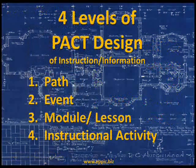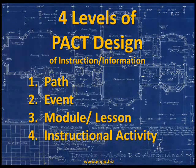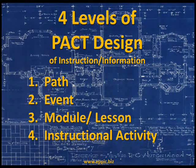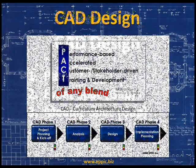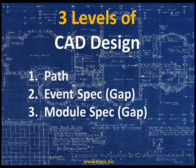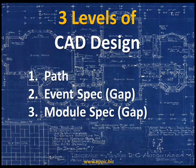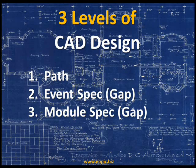There are four levels of specific PAC design of instruction and information: the path level, the event level, the module and lesson level, and the instructional activity level — the final level of design. In curriculum architecture design, which is a four-phase process, there are three levels of design out of the four. A CAD project produces a training and development or learning path, identifies event specifications and modular event specifications, and then module specifications for the gaps within the event. If you thought of the event as a book, the modules would be the chapters, and the path would be the reading assignments for some learning and performance purposes.